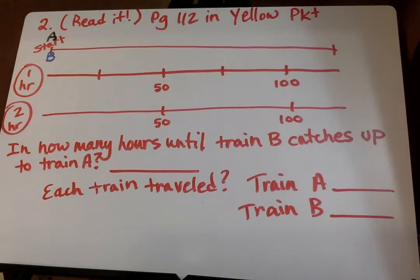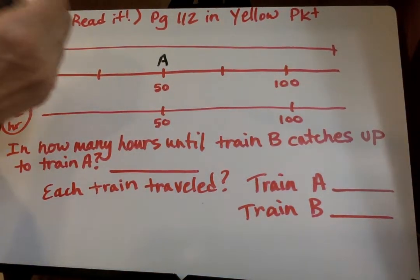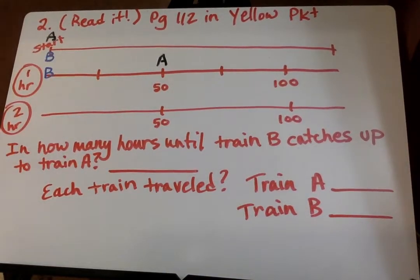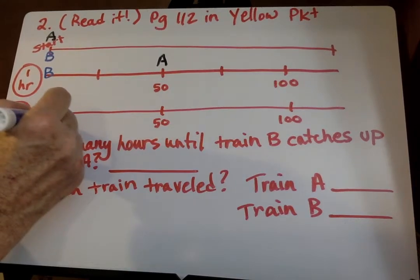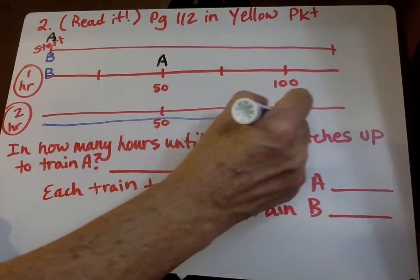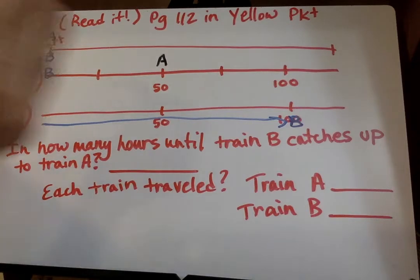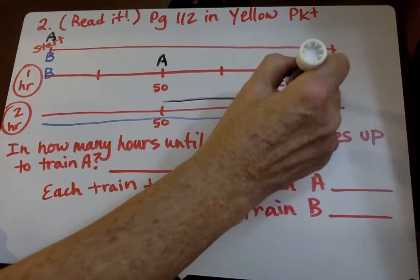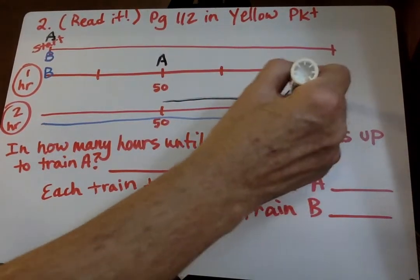Train A leaves first and travels at 50 miles an hour. So train A, 50 miles per hour. And he goes and B is still back at the station. So they're 50 miles apart. Now train B leaves an hour later and it goes 100 miles an hour. So B zips on down there in one hour. Train B is right there. Train A is still putting along at 50 miles per hour. And there's train A right there. So it looks like they catch up right here after two hours.